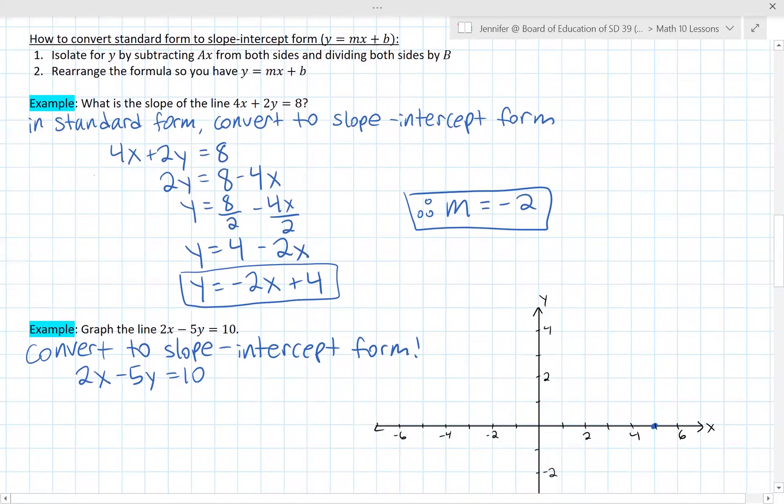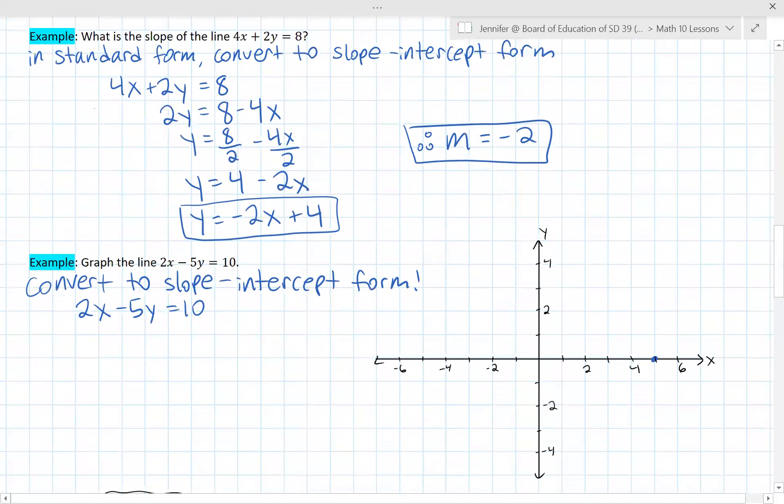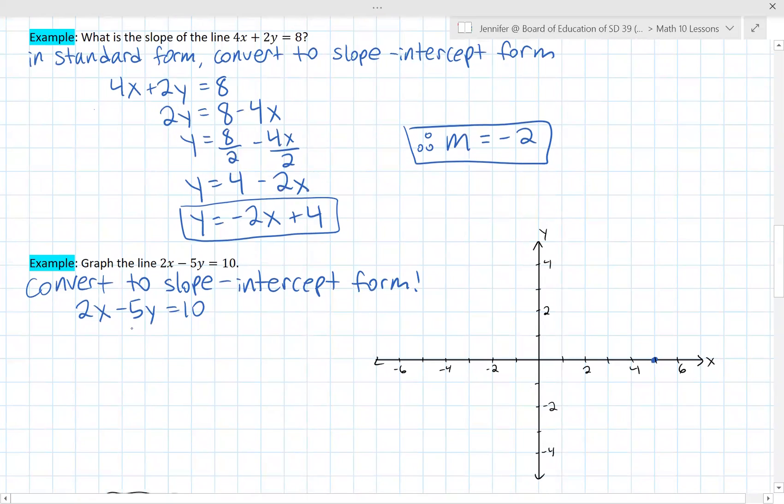If we want to graph lines given to us in standard form, it's the same idea that just convert it to slope-intercept first, and then we already know how to deal with that. So we're given 2x minus 5y equals 10. Convert to slope-intercept. First, we're going to bring the 2x to the other side. Remember, it changes sign. And we're going to divide both sides by negative 5 to get our y on its own. 10 divided by negative 5, and this divided by negative 5.